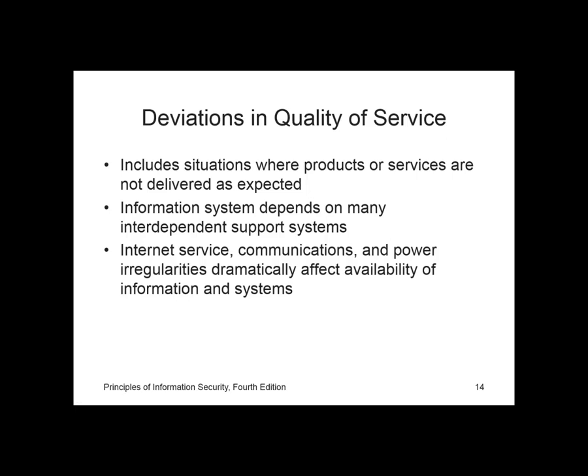As a result of any attack on a company's information or breach into the system, products or services may not be delivered to customers as expected — a potential deviation in quality of service. This category represents situations where an organization's information system depends on the successful operation of many independent support systems, including power grids, telecommunication networks, parts suppliers, service vendors, and even janitorial staff and garbage haulers. Internet service, communications, and power irregularities are three sets of service issues that dramatically affect the availability of information and systems.